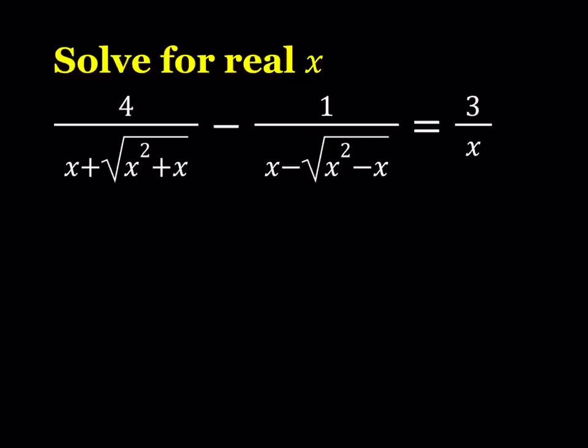So we have 4 over x plus the square root of x squared plus x, minus 1 over x minus the square root of x squared minus x, equals 3 over x. And we're going to be looking for real values of x. So let's get started.